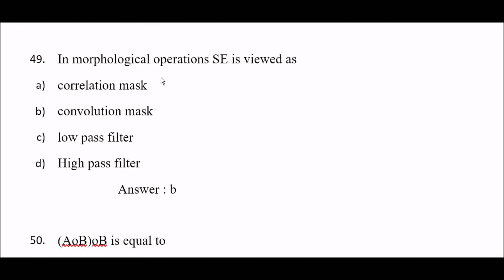Next question: in morphological operations, the structuring element SE is used as — option A: correlation mask, option B: convolution mask, option C: low-pass filter, option D: high-pass filter. The right answer is option B — convolution mask.